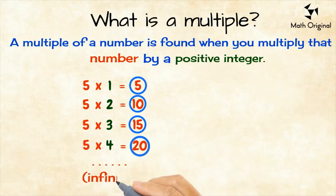Till infinite, since we have infinite natural numbers. So, the multiples of 5 are 5, 10, 15, 20, and so on.